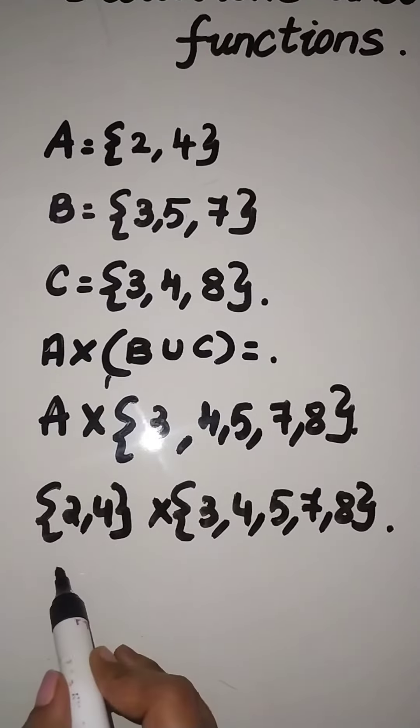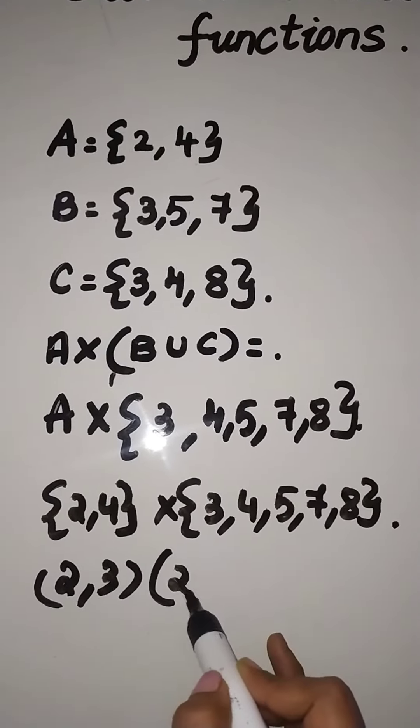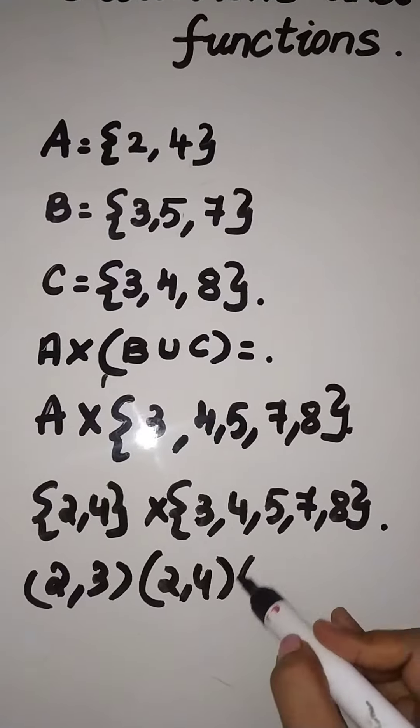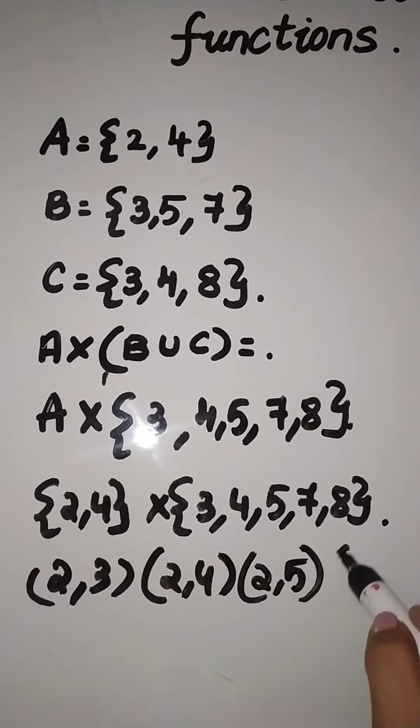Let's multiply this. We will get 2, 3 as the first pair, 2, 4, 2, 5, 2, 7